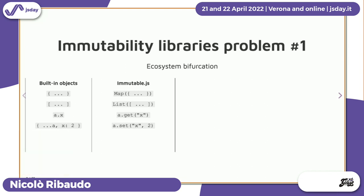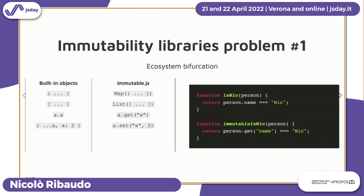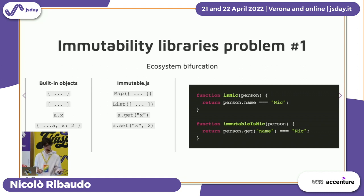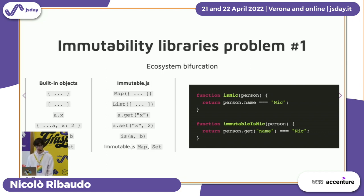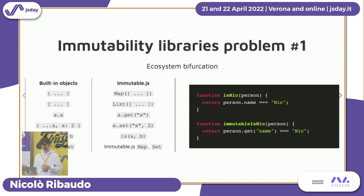For classic JavaScript objects, you can use normal property access or spread into a new object to update an existing property without changing the original. When using Immutable.js, you have to use their own functions like get and set. This means you cannot write code that works with whatever type of data structure it receives — you have to choose whether to support Immutable.js or classic JavaScript. The same is true for equality: you cannot use the classic JavaScript equality operator with Immutable.js; you have to use the Immutable.js one.